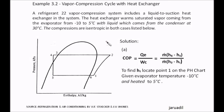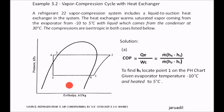Here is our problem. First, you draw the pH chart — the pressure-enthalpy diagram. You have to plot the points 1 to 2 for compression, 2 to 3 for condensation, 3 to 4 where the heat exchanger is, 4 to 5 for expansion, 5 to 6 for evaporation, and 6 to 1 again through the heat exchanger.